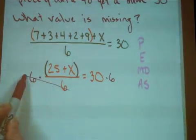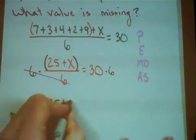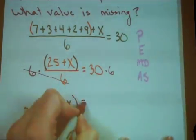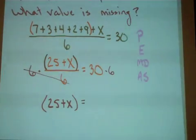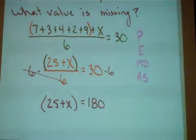When I do that, the 6's cancel out, and I'm left with that 25 plus x, set in those implied parentheses. And that's equal to, well, let's see, what is 30 times 6? Can you do that in your head? It's 180.